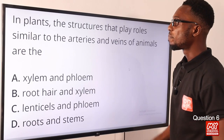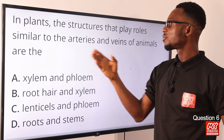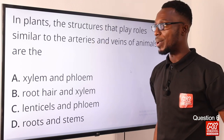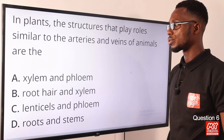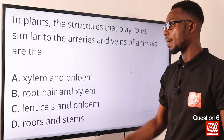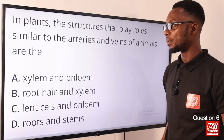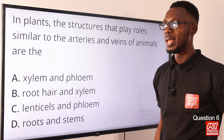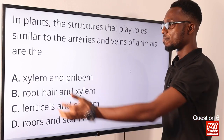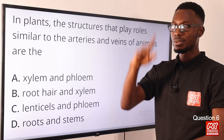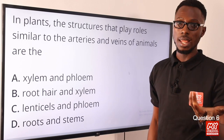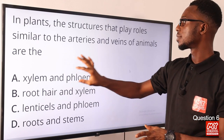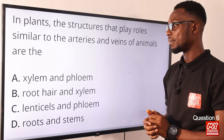Question six: in plants, the structures that play roles similar to the arteries and veins of animals are the xylem and phloem. The xylem conducts water and mineral salts from the roots to every other part of the plant. The phloem conducts manufactured food from the leaf to other parts of the plant for assimilation or storage. The correct option is option A — xylem and phloem.